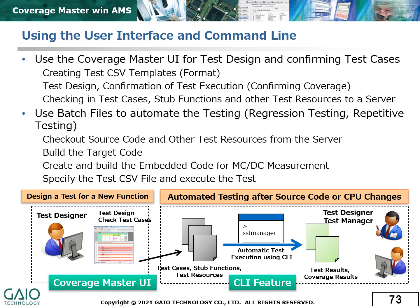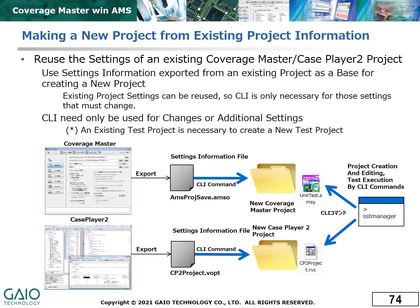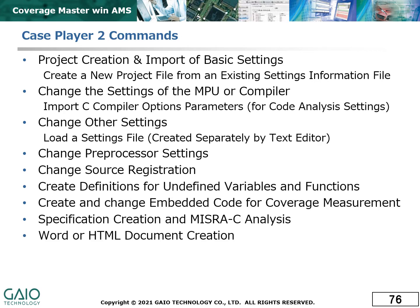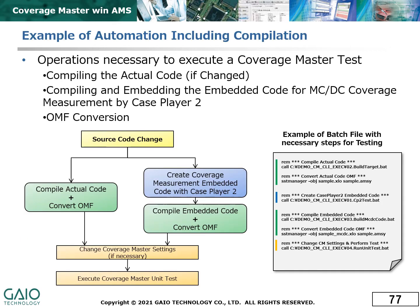The CLI option can therefore greatly increase the efficiency of test design and enable the easy automation of test execution. Creation of a new project from an existing project is an easy task, and modifications to settings for the new project can be made using the command line interface. These are the main features of CoverageMaster WinAMS and Case Player 2 which are accessible from the command line interface. This slide shows a very simple example of how test execution would be implemented in a batch file.